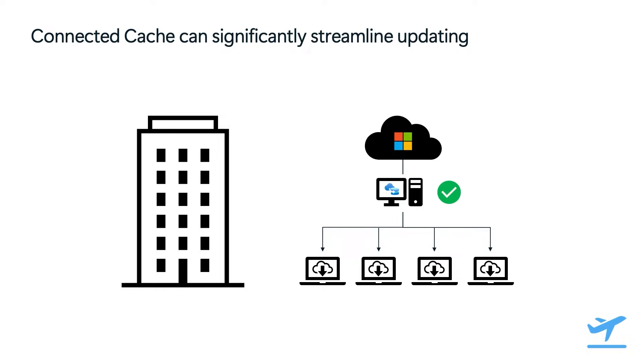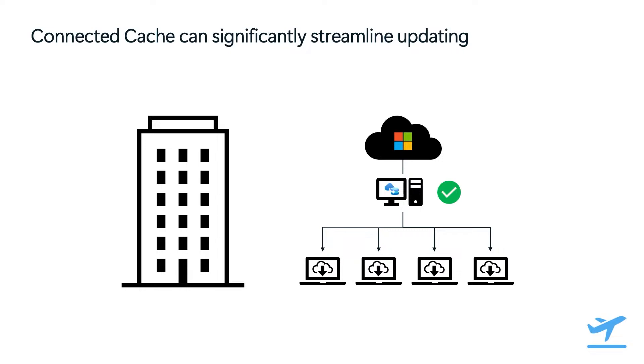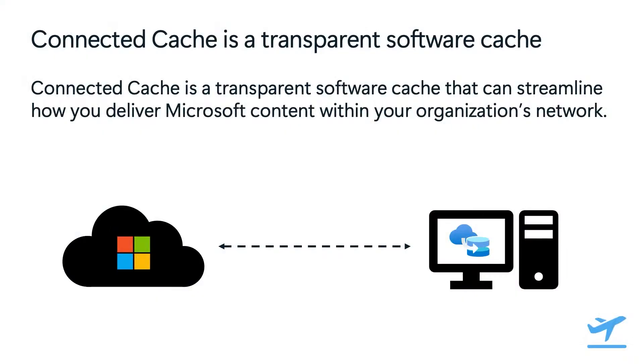Here you can deploy a Connected Cache node to your network, and you can host it on a VM, on servers, or even desktop hardware. After you deploy your cache node to your network, you can configure your enterprise managed devices to request Microsoft content from your Connected Cache node. When your cache node receives a request for content, it will download from the CDN once, and then will serve it to any subsequent devices that request it. As a result, your network doesn't crash, and your devices update much more quickly. In short, Connected Cache acts as a transparent software cache that you can configure and manage through Azure.